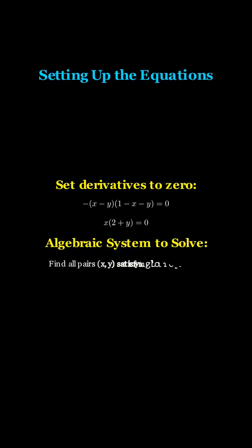To find critical points, we solve the system of algebraic equations obtained by setting dx/dt equal to zero and dy/dt equal to zero. This gives us two equations: negative of x minus y times 1 minus x minus y equals zero, and x times 2 plus y equals zero.